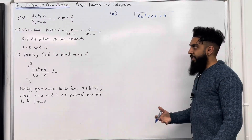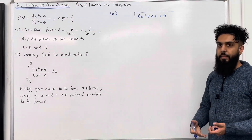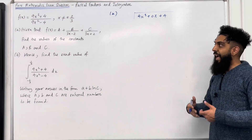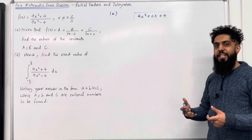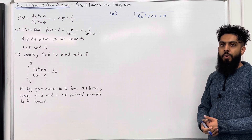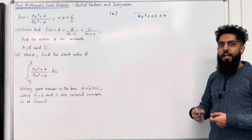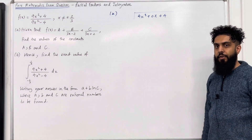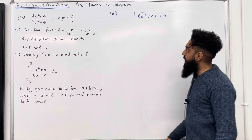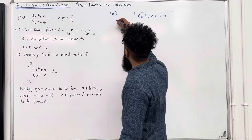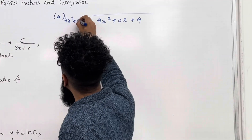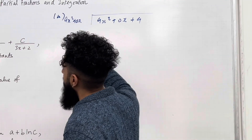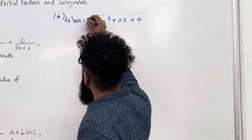My divisor is 9x squared minus 4. Again, 9x squared minus 4 is an injured polynomial. To repair it, I need to introduce a 0x, so I've got 9x squared plus 0x minus 4.